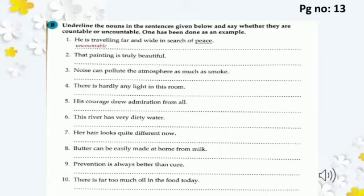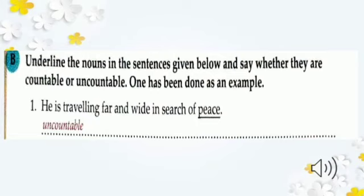One more exercise on page 13 is about countable and uncountable nouns. Underline the nouns in the sentences given below and say whether they are countable or uncountable. Number one: 'He is traveling far and wide in search of peace.' The noun is 'peace' (سکون). We cannot count peace, so it is an uncountable noun. Complete the rest of the exercise similarly.